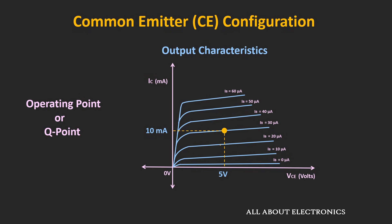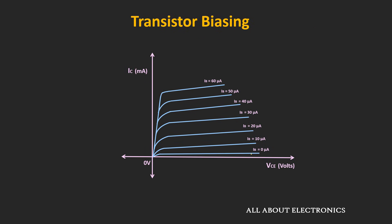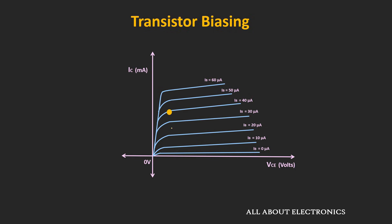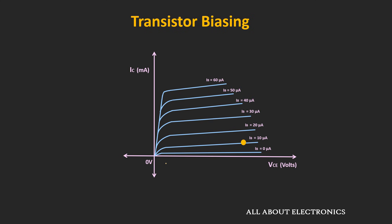The operating point should be in the active region, but within the active region it could be set anywhere — in the center, or higher, or lower. Whenever the operating point is near the top and we apply an AC signal, some portion of the amplified signal will get clipped because the voltage VCE cannot go below 0V. Similarly, when operated near the bottom, some portion of the current will get clipped because the collector current can't go below 0A, and due to that, some portion of VCE will also get clipped. That means whenever the operating point is near the saturation or cutoff region, it may lead to nonlinear distortion in the output waveform.